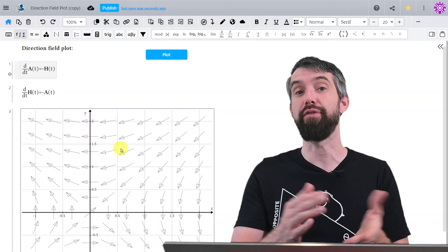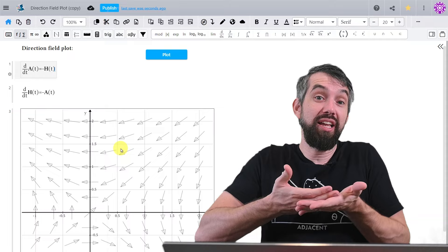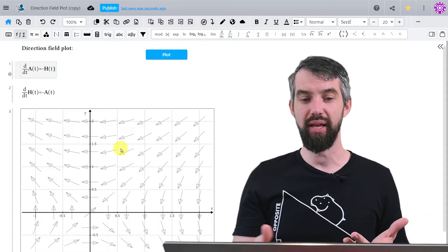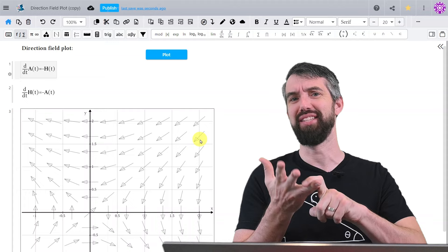So you can kind of imagine a direction field is telling you at any given moment, here's the arrow of where you're going to move in the solution space. For us, we're only going to focus on the first quadrant because we're only going to imagine positive amounts of aliens and humans. We don't know what negative humans means.